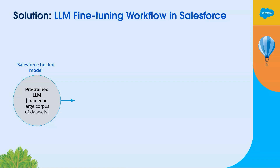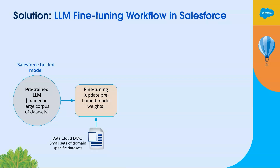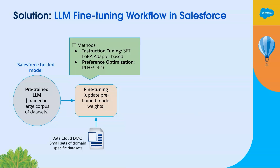You start with a pre-trained model. The recommendation is to start with small models — my definition of small model is anything sub-10 billion parameters, and that's where we are seeing the biggest benefit. You take the small model, get some examples of how you want your model to behave, and then pick a fine-tuning technique.